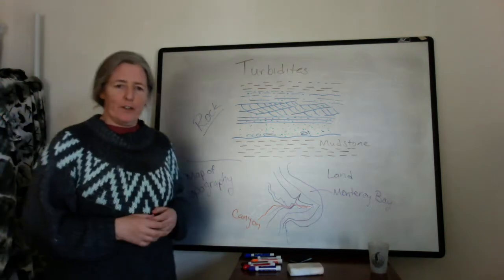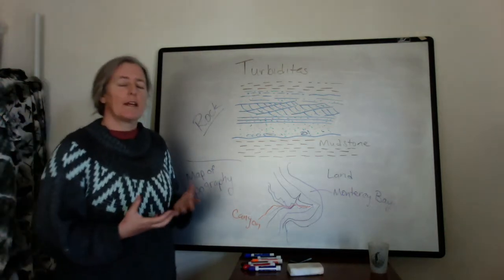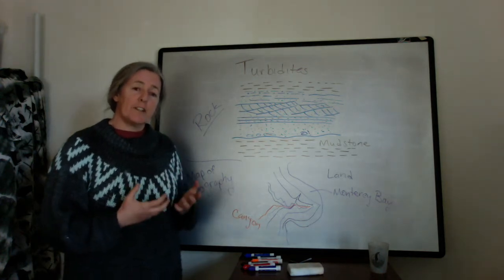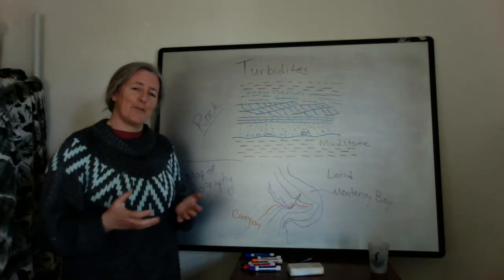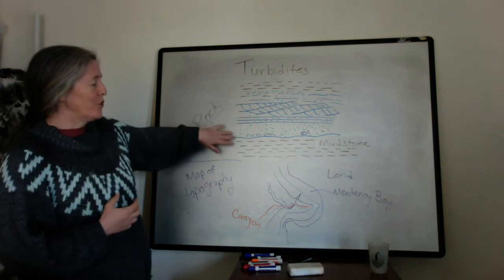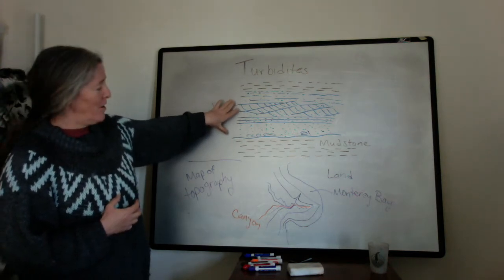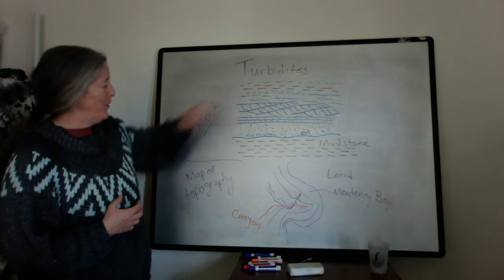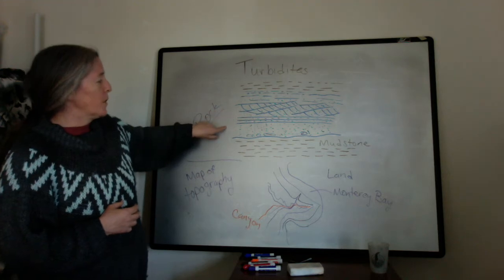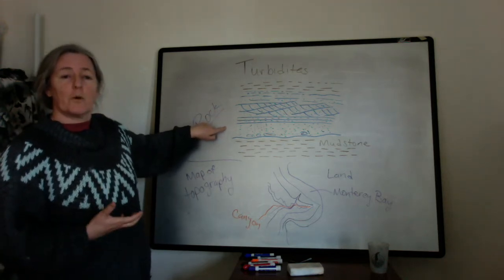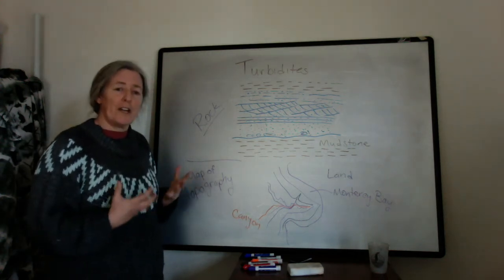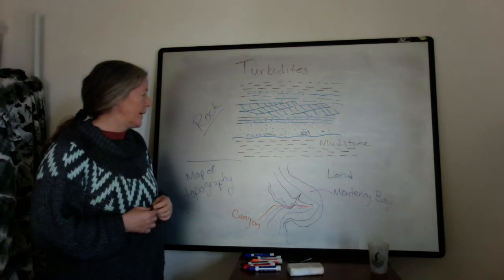About a hundred years ago, scientists were making a lot of discoveries that now allow us to connect turbidity currents on the ocean floor and turbidites — the rocks — that show a characteristic flow through time. Geologists were describing turbidite rocks and suggesting that there were actually very fast flows on the bottom of the ocean floor, even though dynamically it's very difficult to sort out how to do that.